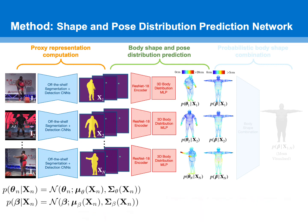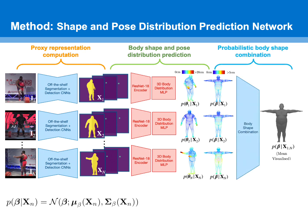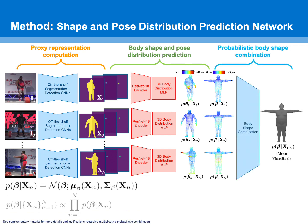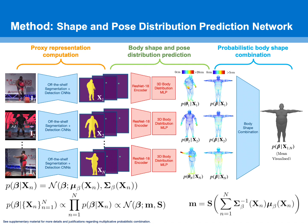Finally, the Gaussian body shape distributions predicted from each input are probabilistically combined into a final distribution that aggregates shape information across the input group. The combined distribution is itself a Gaussian, obtained as the product of Gaussian densities. The combined mean is a final estimate of the subject's body shape and can be intuited as the average of the means predicted from each input, weighted by the corresponding uncertainties.